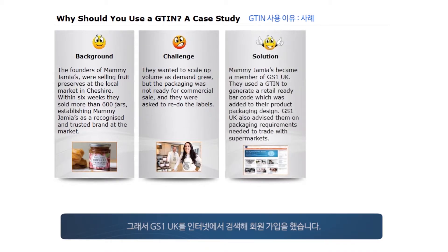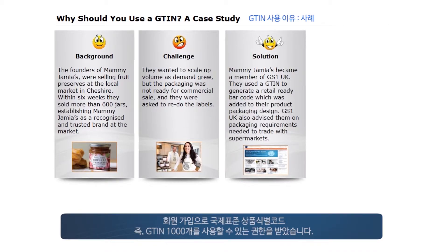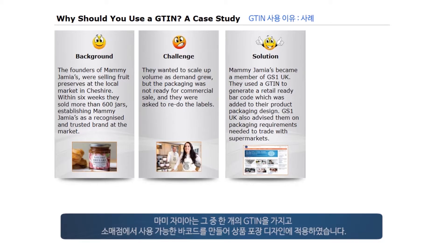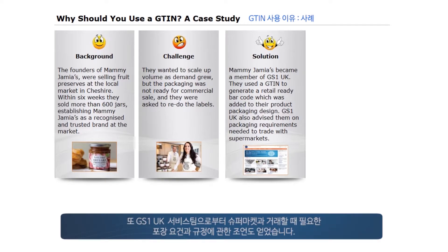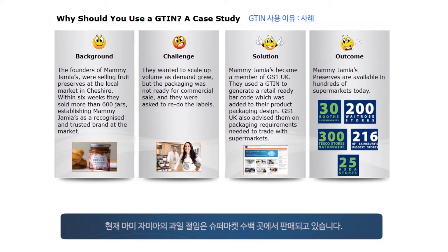They located GS1 UK online and became a member. The initial membership gave them 1,000 global trade item numbers. Mami Jamias used the GTIN to generate a retail-ready barcode, which was added to their product packaging design. The service team at GS1 UK also advised them on packaging requirements and regulations needed to trade with supermarkets. Today, Mami Jamias preserves are available in hundreds of supermarkets.